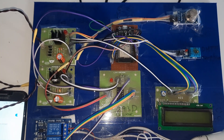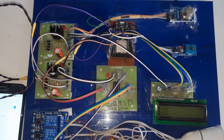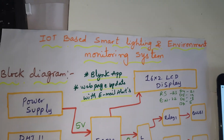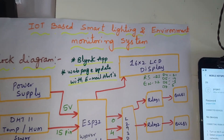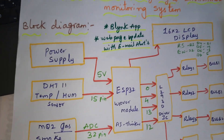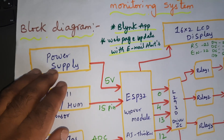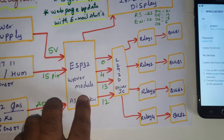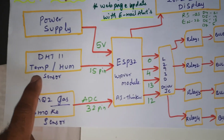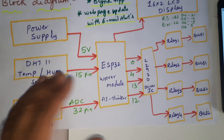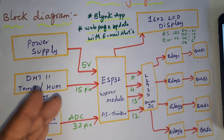Hi, we are from SVS Embedded. The project title is IoT-Based Smart Lighting and Environment Monitoring System. In this project we are using a 5-volt power supply board, ESP32 AI Thinker board, and a DHT11 temperature and humidity sensor. If anything should happen, it will send the data to the Blynk app.